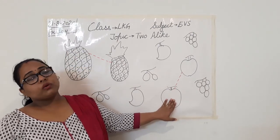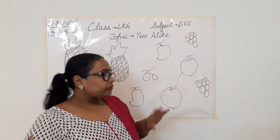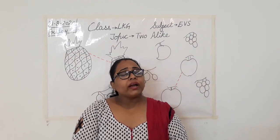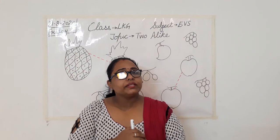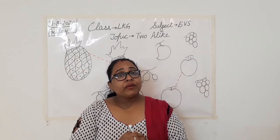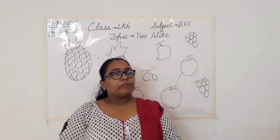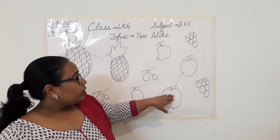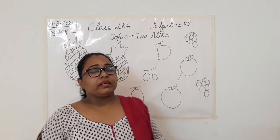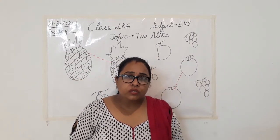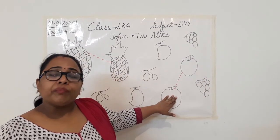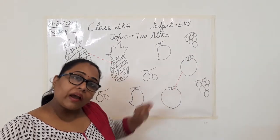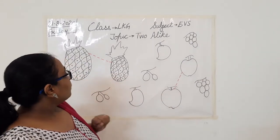It's a sweet fruit. Now when you cut the apple, do you find one seed or many seeds? They have many seeds. Apple has many seeds — I have shown you in the previous video also. So apple is a fruit that has many seeds. And we eat this fruit after peeling.